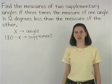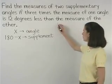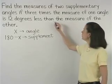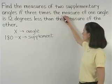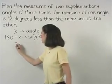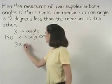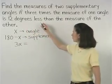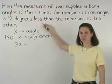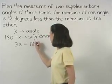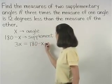Now to find the value of x, we can use the second part of the problem to set up an equation. 3 times the measure of one angle, that's 3x, equals 12 degrees less than the measure of the other. That's 180 minus x minus 12.